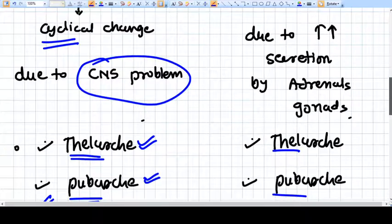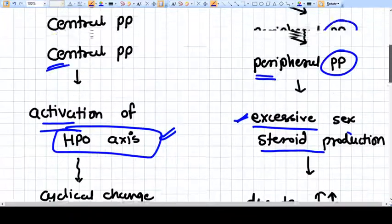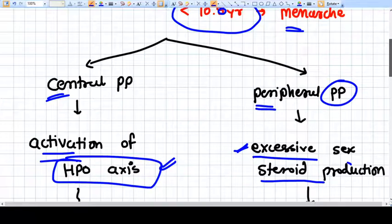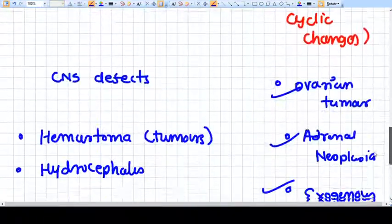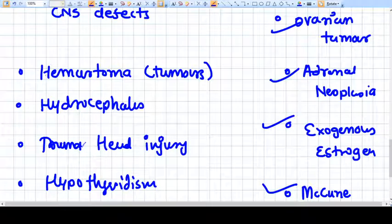And androgens independently. That's why we have secondary peripheral precocious puberty. In central precocious puberty the reasons will be central CNS kind of things.